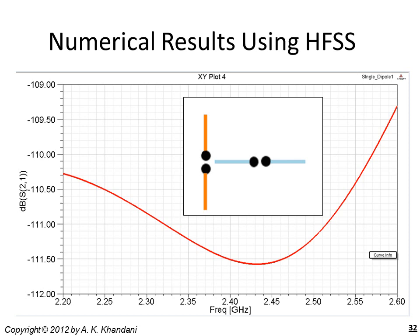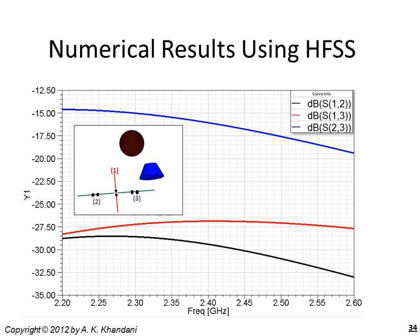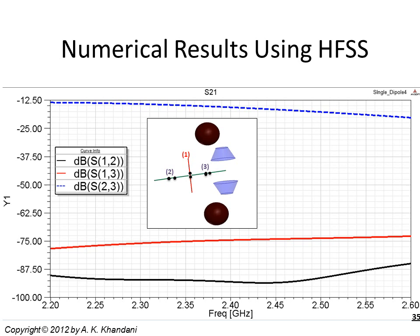HFSS simulation results show that across the frequency band of 2.2 to 2.6 GHz, coupling is around minus 100 dB. For two horizontal antennas in a MIMO system, the coupling between antennas 2 and 3 is very high, but coupling between the vertical and the two horizontal antennas is around minus 90 to minus 100 dB. After adding parasitic elements, coupling between vertical and horizontal antennas reduced from minus 90 dB to minus 30 dB, but adding similar parasitic elements to the other side to restore symmetry brought the coupling back to around minus 75 to minus 87 dB.